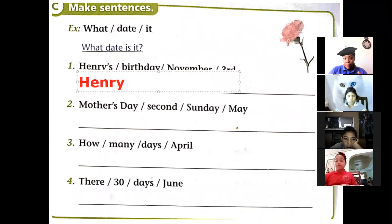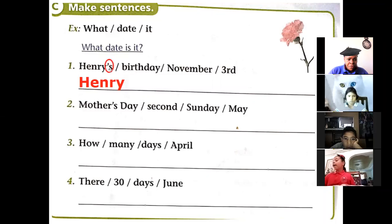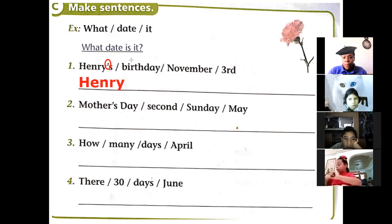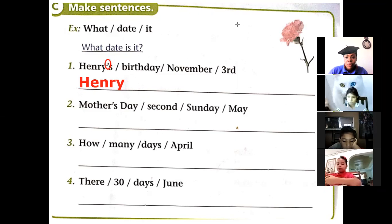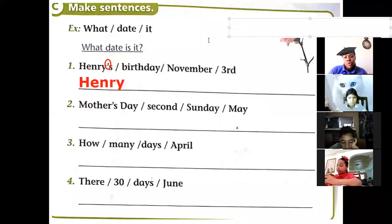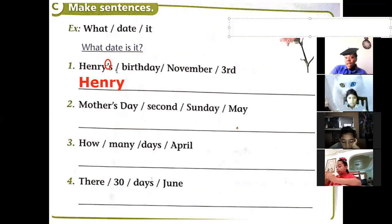Henry is a name, but if you look here in that part, Henry is using an apostrophe. An apostrophe is used because you need to recognize that it shows possession — it's possessive. It shows that something belongs to him. So you need to recognize who that belongs to.